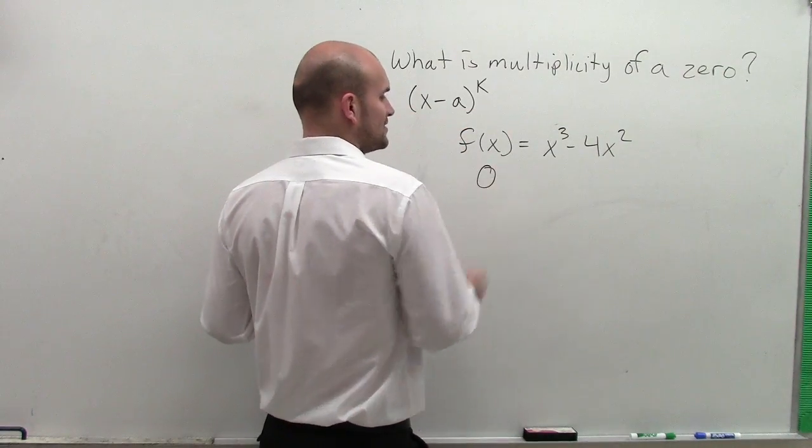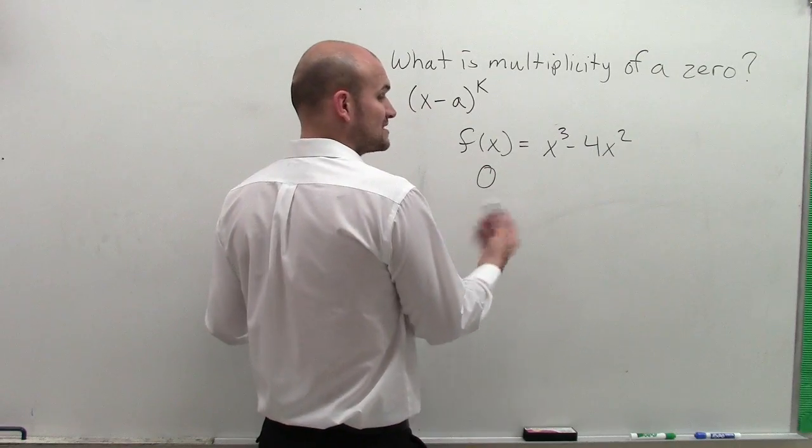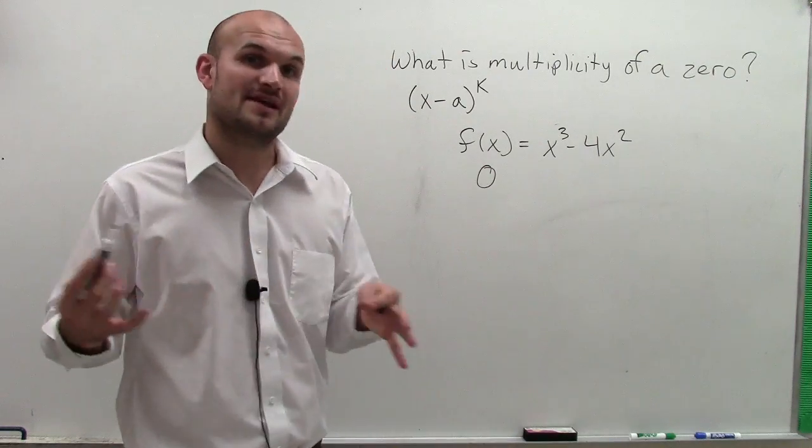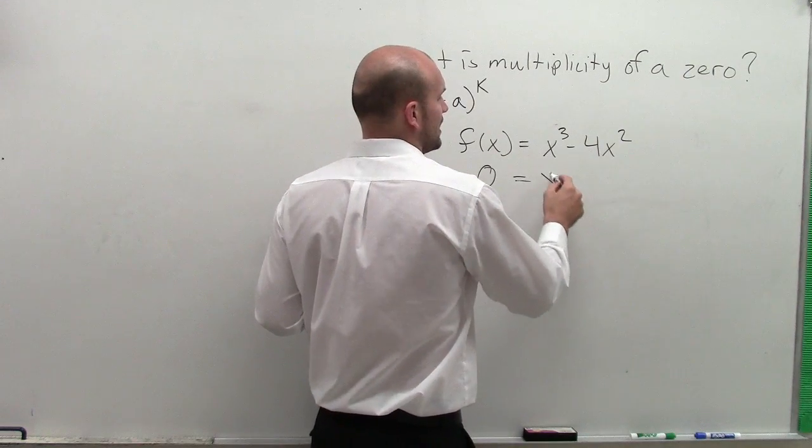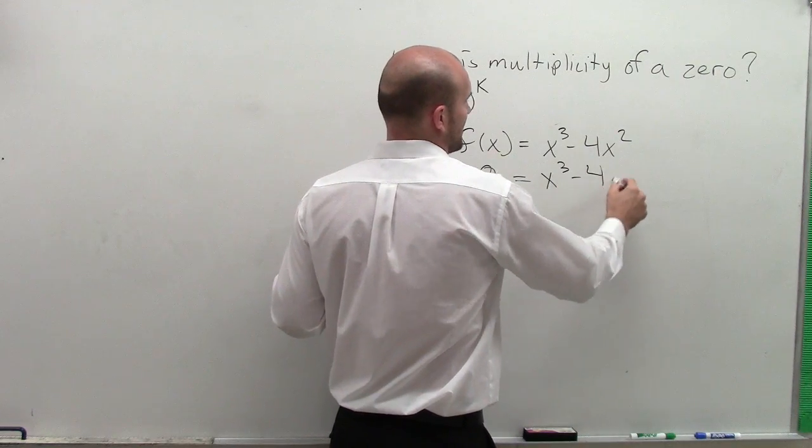To find the x-intercepts or the zeros, we put zero in for f(x) because we want to find when f(x) equals zero. So we have f(x) = x³ - 4x², and we set 0 = x³ - 4x².